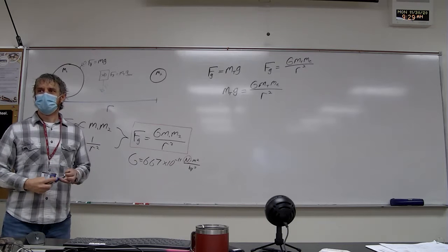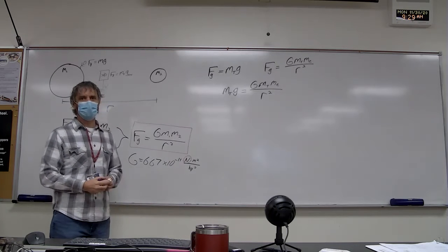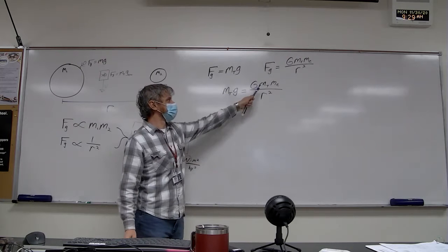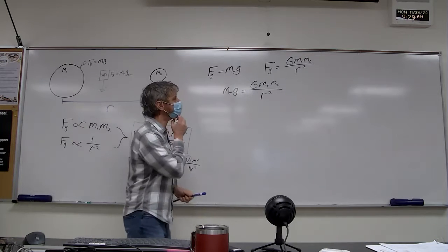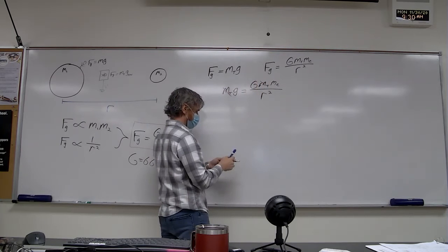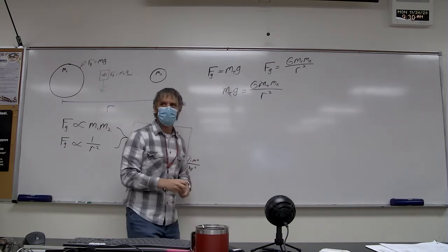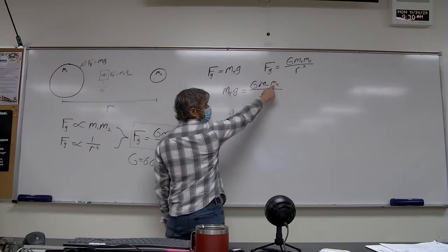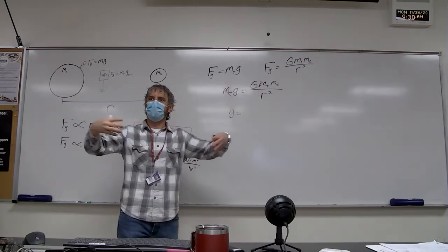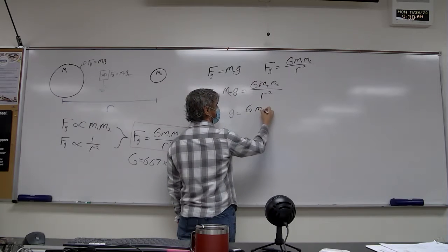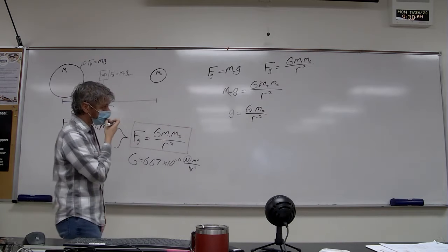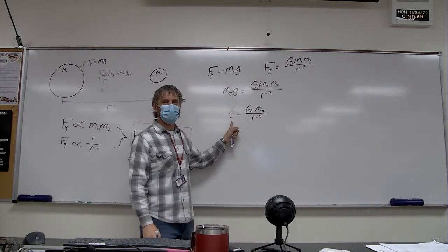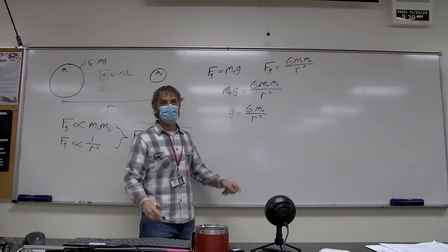The mass of Tatum times g equals big G times her mass times the mass of the Earth divided by her distance from the Earth's center squared. Everyone brought Tatum's mass to the party, so her mass cancels out. We get a nice generalized equation for g: g anywhere on or away from the Earth is simply big G times the mass of the Earth divided by your distance from the Earth squared. If you use the actual radius of the Earth for R, you get a value of 9.8 meters per second squared.